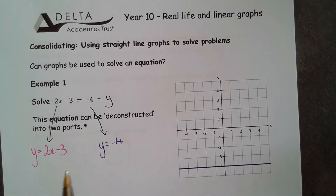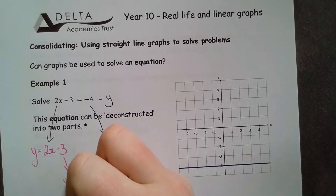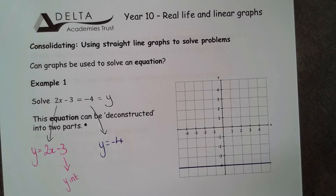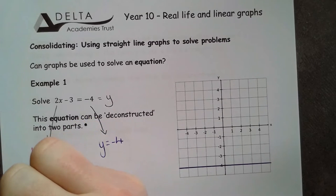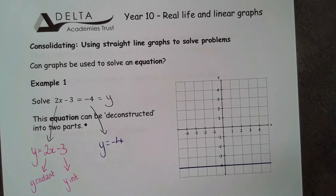The second one is 2x minus 3. This means it's got a y intercept of minus 3 in the form y equals mx plus c. And I've got a gradient of 2. So to plot this one I'm going to do it the cheat's way as opposed to doing it with my table, but feel free to do that if you would like to.